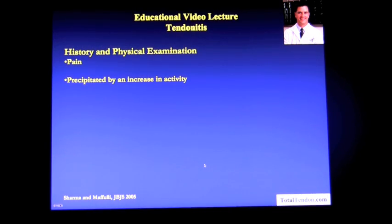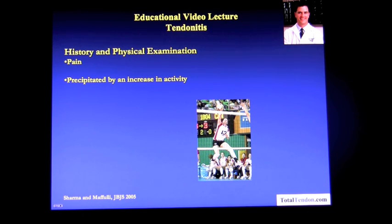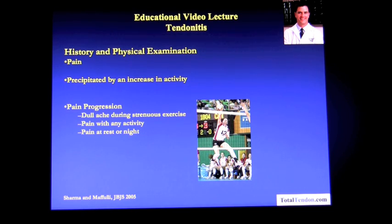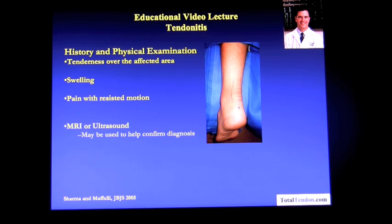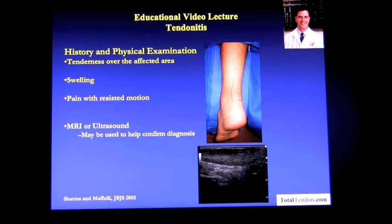The history and physical examination of somebody with tendinitis involves pain around the area precipitated by an increase in activity. The pain then progresses from a dull ache during strenuous activity to pain with any activity, and then pain at night or even at rest. On the physical examination, there's tenderness and swelling over the affected area — you can see this Achilles tendon is swollen. There's pain with resisted motion. An MRI or ultrasound may be used to help confirm the extent of the problem, and this is an ultrasound of a patient with Achilles tendonitis.